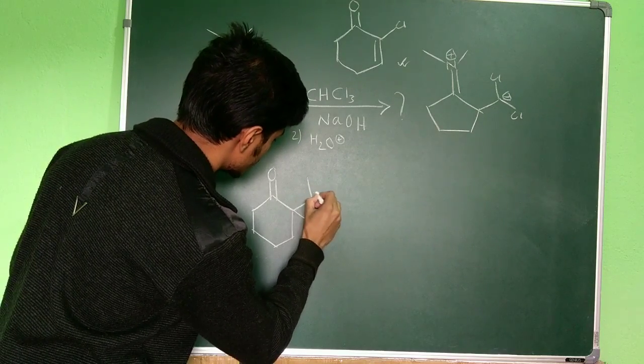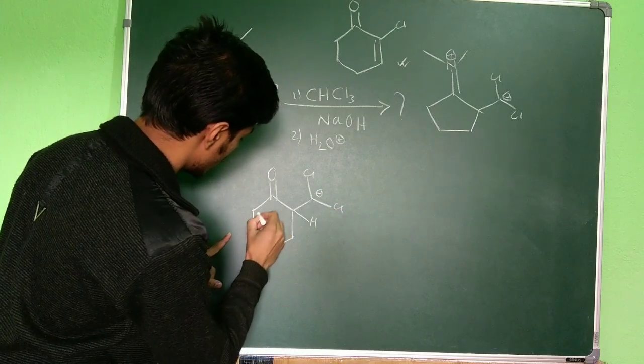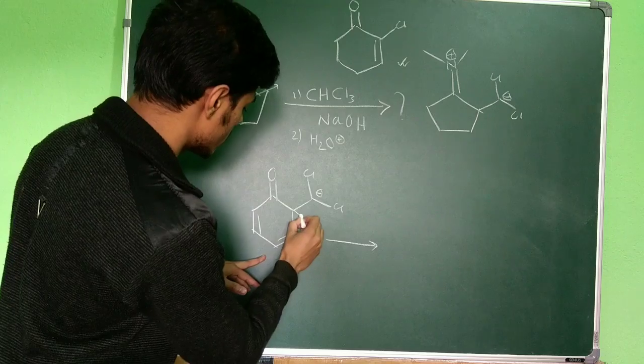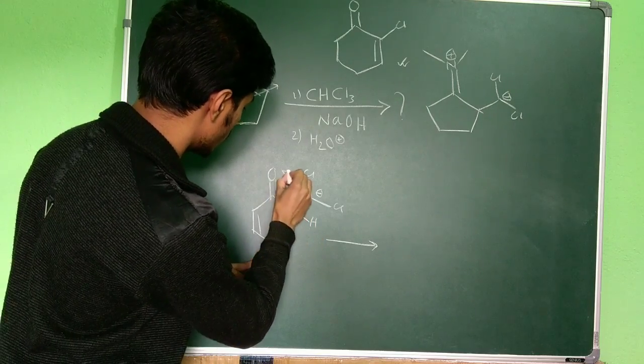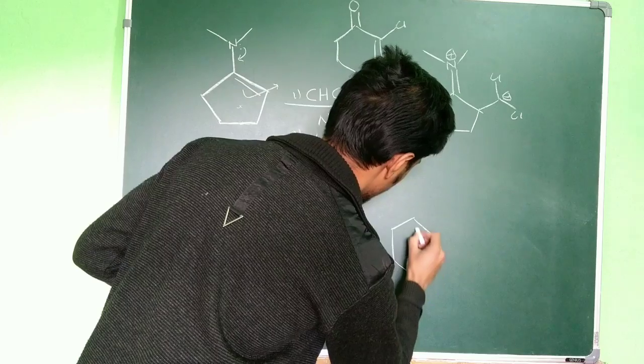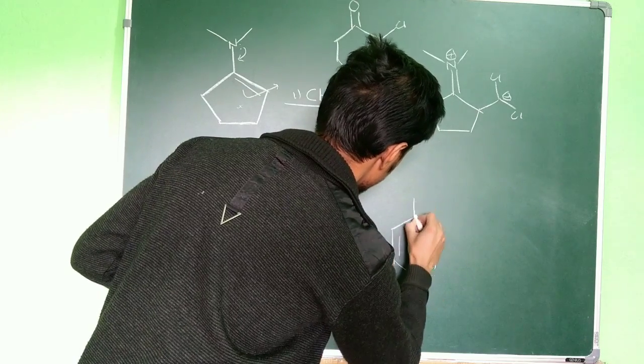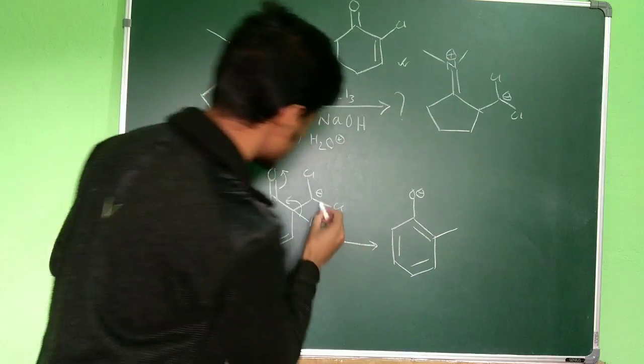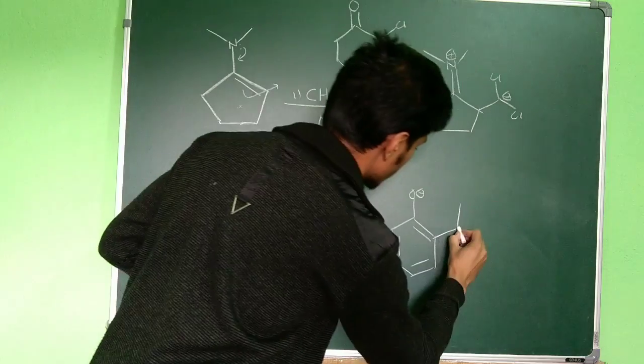So what happens in Reimer-Tiemann reaction? The first attack as I told you is from the ortho position to give you this, right? So here you have a negative charge, two chlorides here, and this.